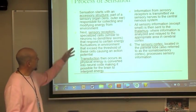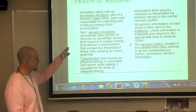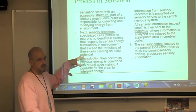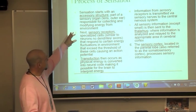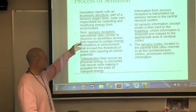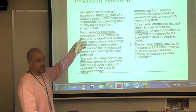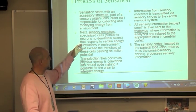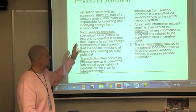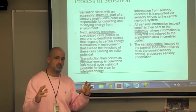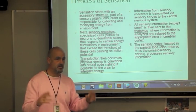In the process of sensation, everything starts off with an accessory structure, which is a part of a sensory organ — for example, the lens of the eye or the outer ear. It is responsible for collecting and modifying energy from the environment, basically capturing the physical energy from the environment.